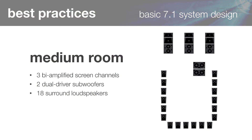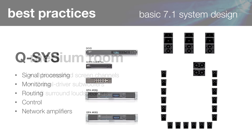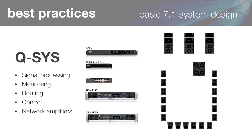Now let's take a look at how it all goes together in a system design. This is just one example of a basic 7.1 sound system for a medium-sized room — let's say about 300 seats — with three bi-amplified screen channel loudspeakers at left, center, and right, two dual-driver subwoofers, and 18 surround loudspeakers. This will be a fully networked Q-SYS application, which provides all loudspeaker signal processing and routing, and network control and monitoring of all system parameters. Using Q-SYS network amps, this entire system can be powered by just two 8-channel amplifiers.